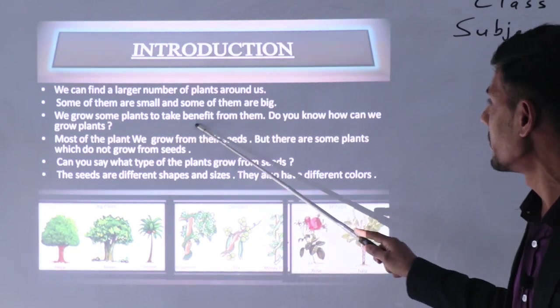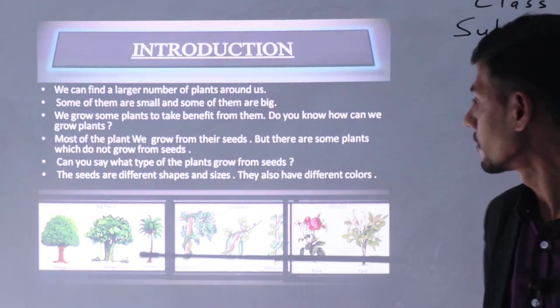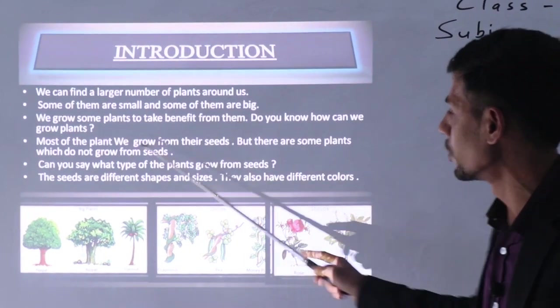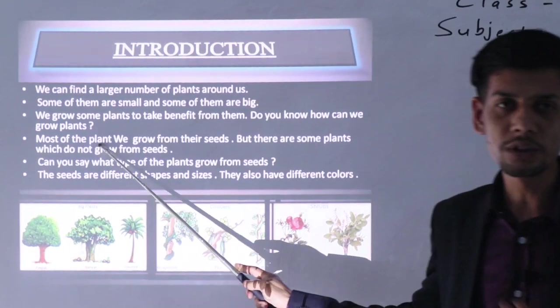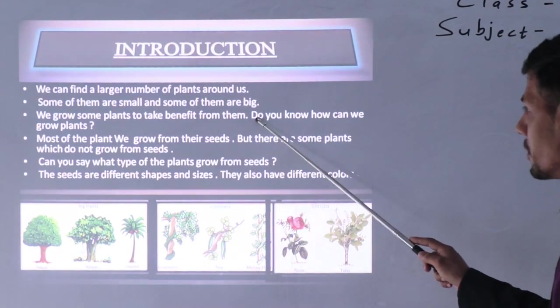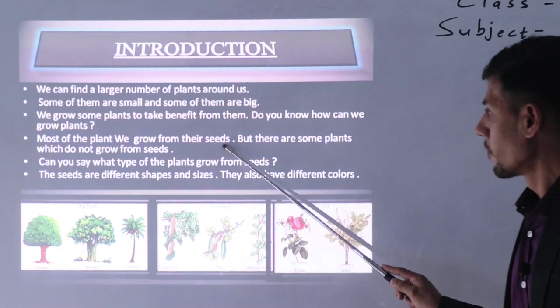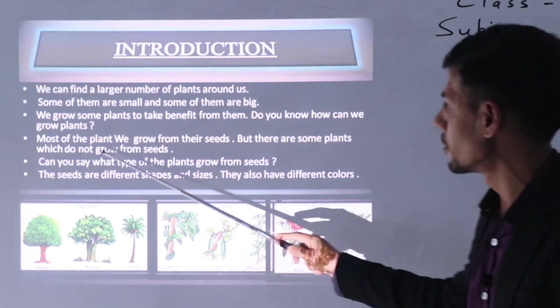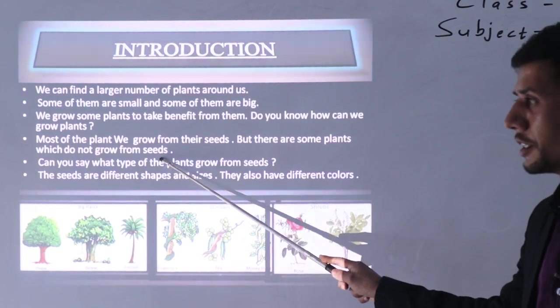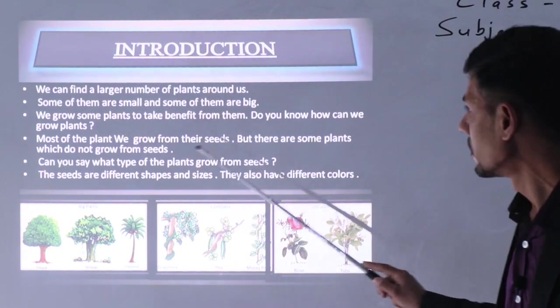We grow some plants to take benefit from them. Yes, obviously we grow some crops, vegetables to earn money and also to eat. Do you know how can we grow plants? Can you tell how can we grow plants? Most of the plants we grow from their seeds. But there are some plants which do not grow from seeds. In our nature there are some plants which we cannot grow from their seed.